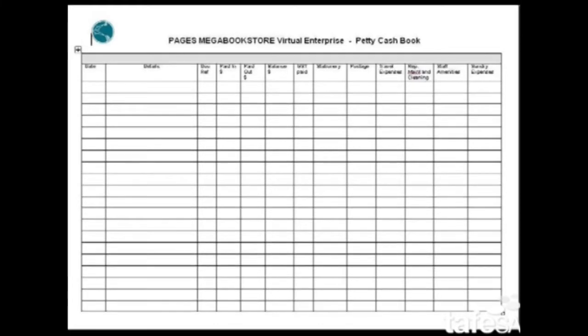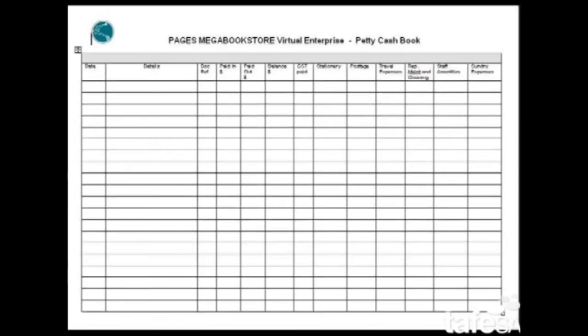The other columns are called the dissection columns and they just show us the categories of expenses. Again, these change from one organisation to another.